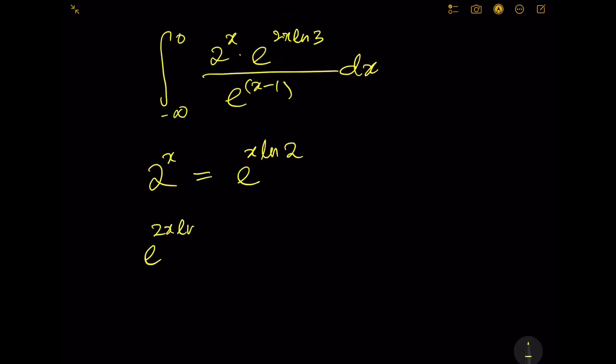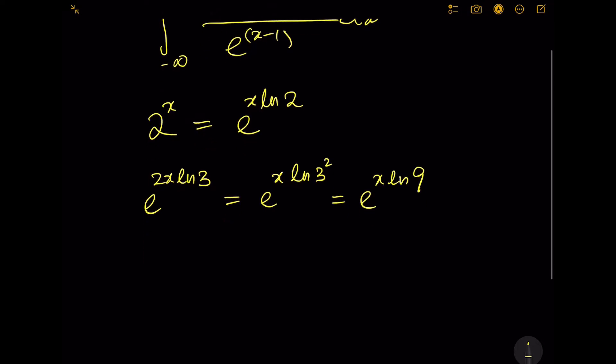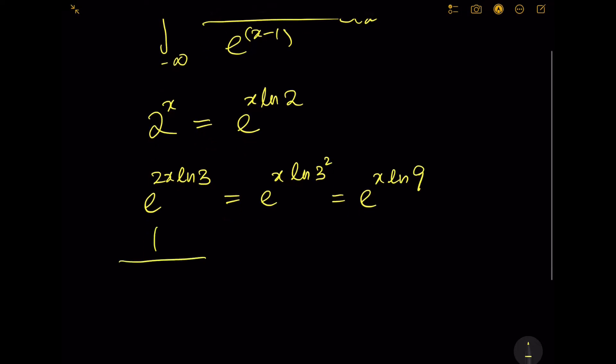Similarly, e^(2x ln 2) times 3 is actually e^(x ln 3) squared, which is e^(x ln 9). And then we have 1 over e^(x-1), which becomes e^(-x) times e^1.